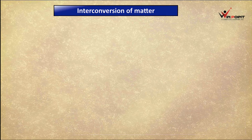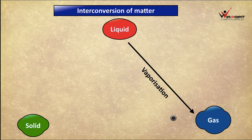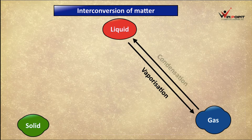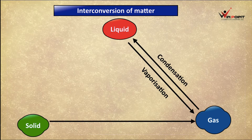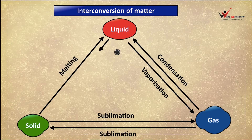Now we are going to discuss about interconversion of matter and the names of each process. There are three states: solid, liquid, and gas. Conversion of liquid into gas is vaporization. Conversion of gas into liquid is condensation. Conversion of solid to gas directly is sublimation. Conversion of gas to solid is also sublimation. Conversion of solid to liquid is melting. Conversion of liquid to solid is solidification.